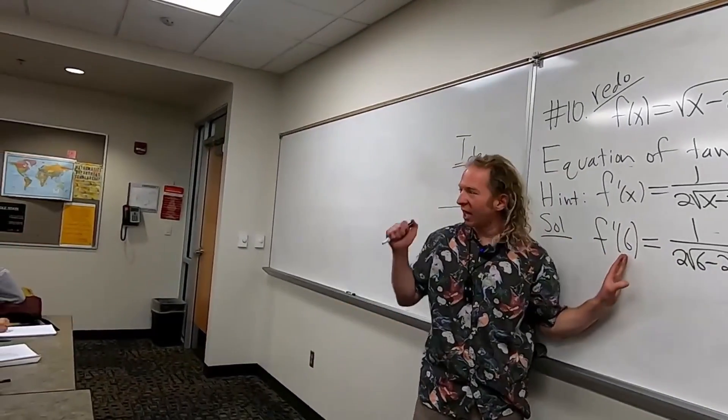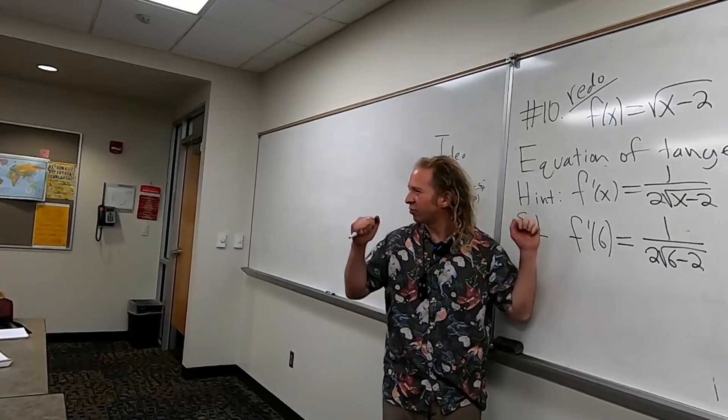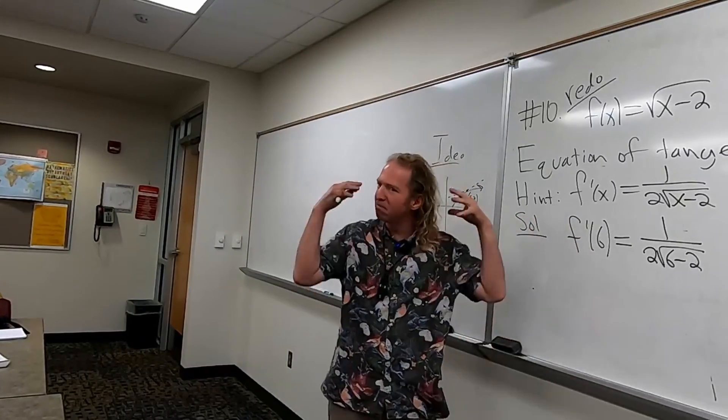So this is the slope of the tangent line at x equals six, right? Because the derivative is the slope of the tangent line. That's the main thing.